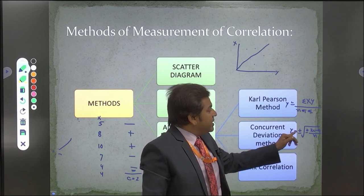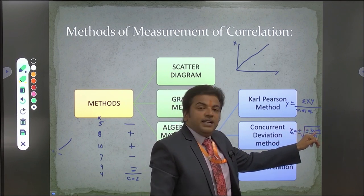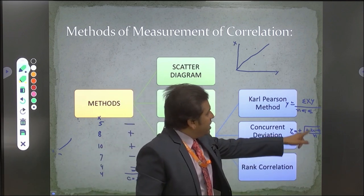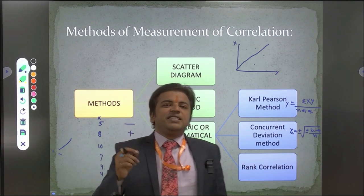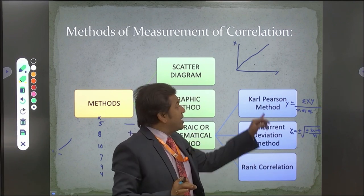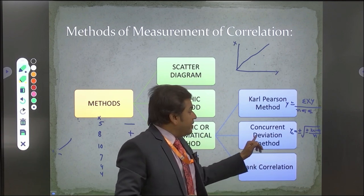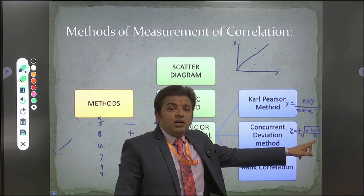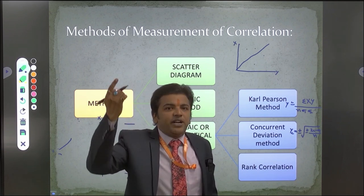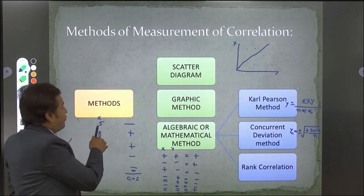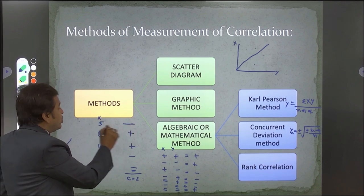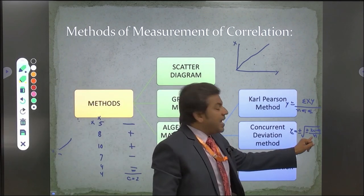One important note: for N in the concurrent deviation method, if we have data for 10 learners, we do not write 10 — we write 9. This is because the first term has no preceding pair, so we leave it blank and it is not counted. Therefore N equals 9, not 10, for the concurrent deviation method.